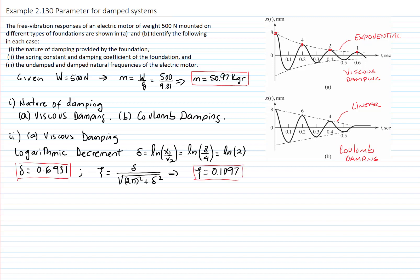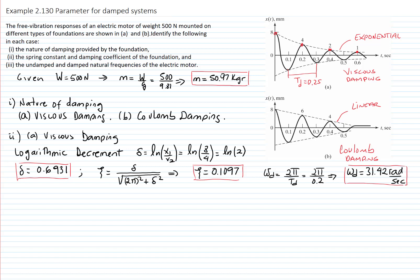To relate zeta to the spring constant and damping coefficient, we need the natural frequency. The system is vibrating at the damped frequency, so what we read from the curve is the damped period, which is 0.2 seconds. The damped frequency is therefore 2π over 0.2, giving 31.42 radians per second. The damped frequency equals the natural frequency multiplied by the square root of (1 minus zeta squared).